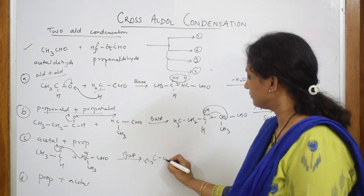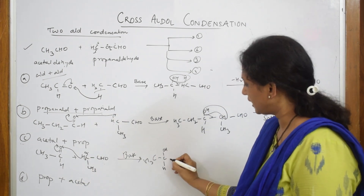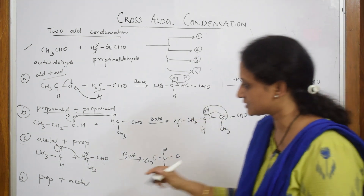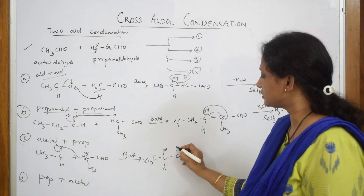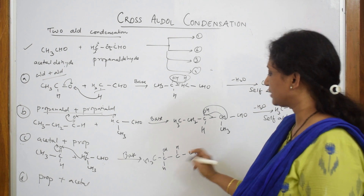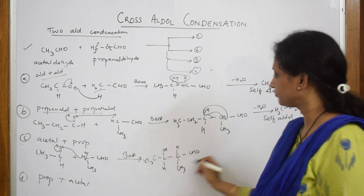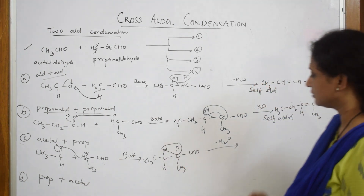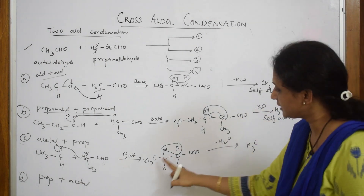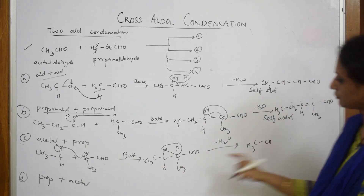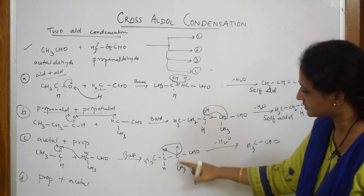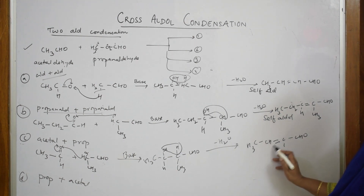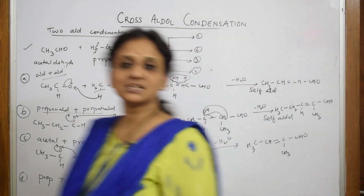In the presence of base, the hydrogen shifts and you get CH₃CH(OH)CH₂CHO as the aldol intermediate — note that the CH₂ becomes CH since one hydrogen has shifted. Then write the hydrogen above so it's easy to show water elimination. Eliminate water: the bond shifts and you get CH₃CH=CHCHO with CH₃ and CHO groups. Check the valency — four bonds per carbon — and this is your third (cross aldol) product.